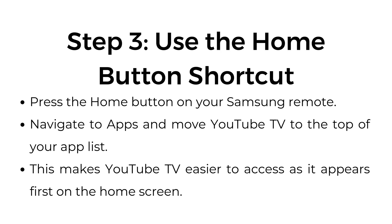Step number three: use the home button shortcut. Press the home button on your Samsung remote, navigate to Apps, and move YouTube TV to the top of your app list. This makes YouTube TV easier to access as it appears first on the home screen.